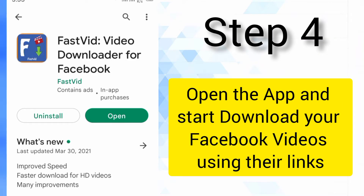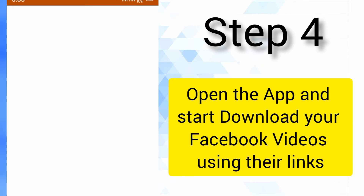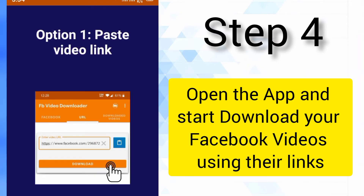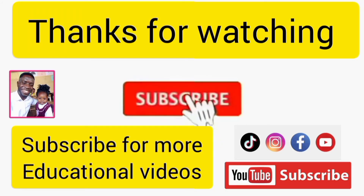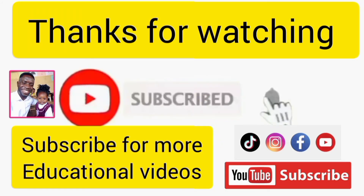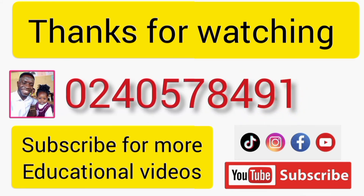You can click open and start downloading your videos from Facebook. With this app on your phone, anytime you see a video on Facebook, search and copy the link of the video, then come and paste it inside the Fast Video Downloader app, then download the video. Thank you.